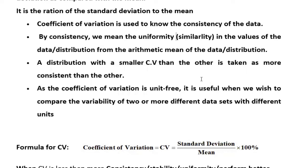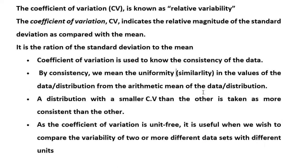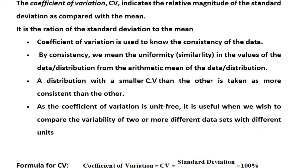An interesting property: the coefficient of variation is unit-free — it has no unit. We express it as a percentage, but there is no physical unit. All coefficient of variation values for any group of data will be in percentage. Because it is unit-free, it is very useful to compare two or more different datasets that have different units.